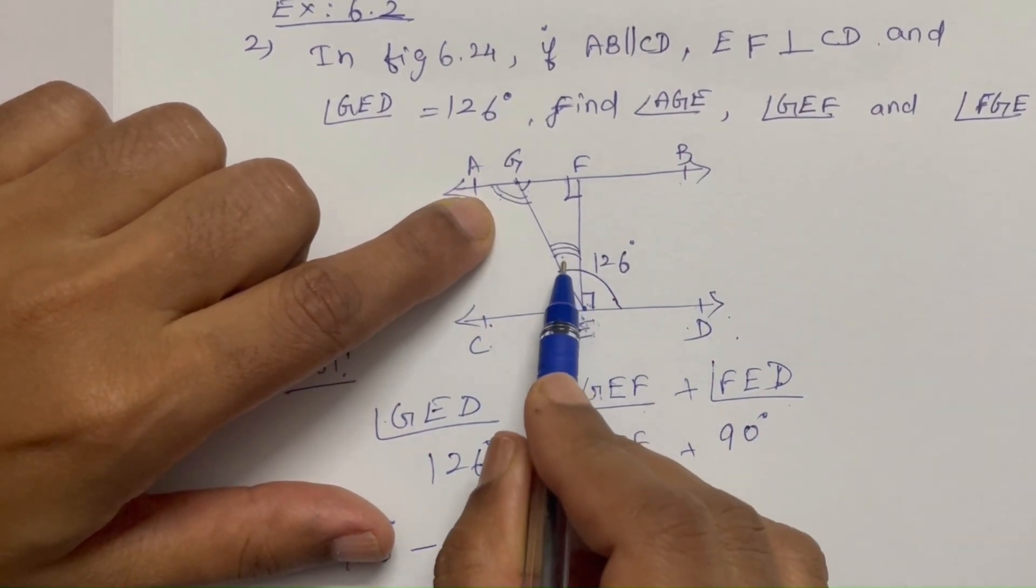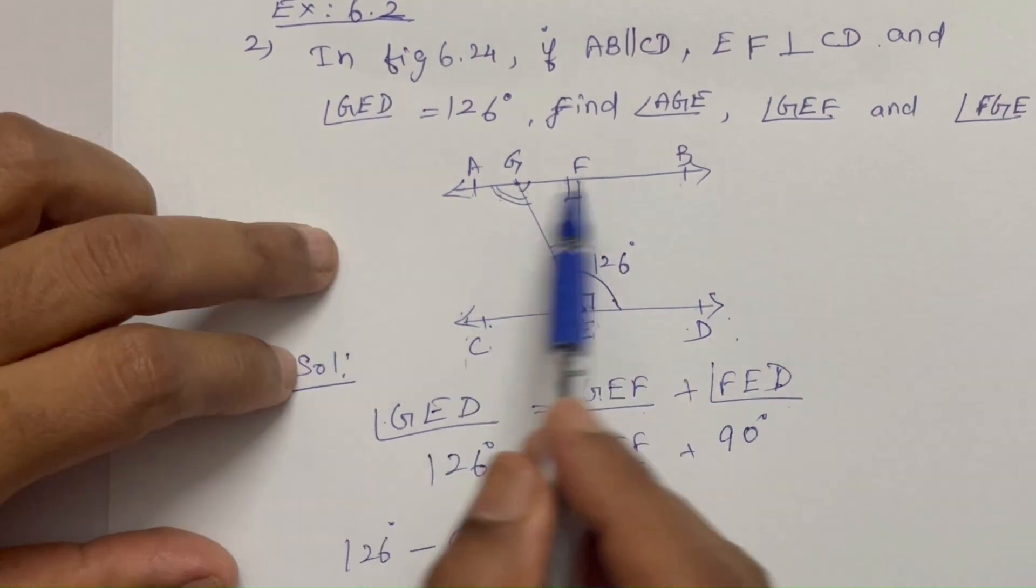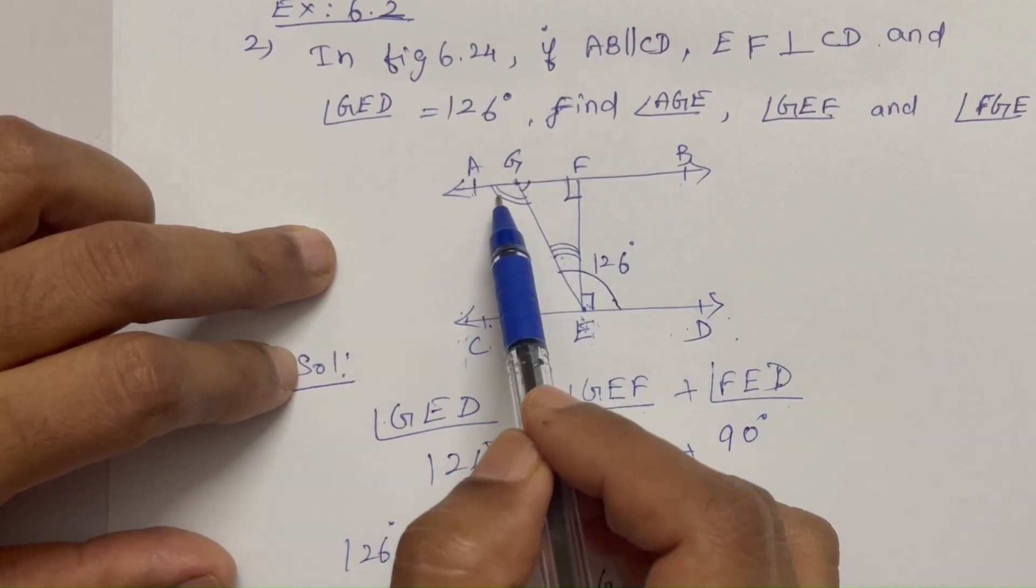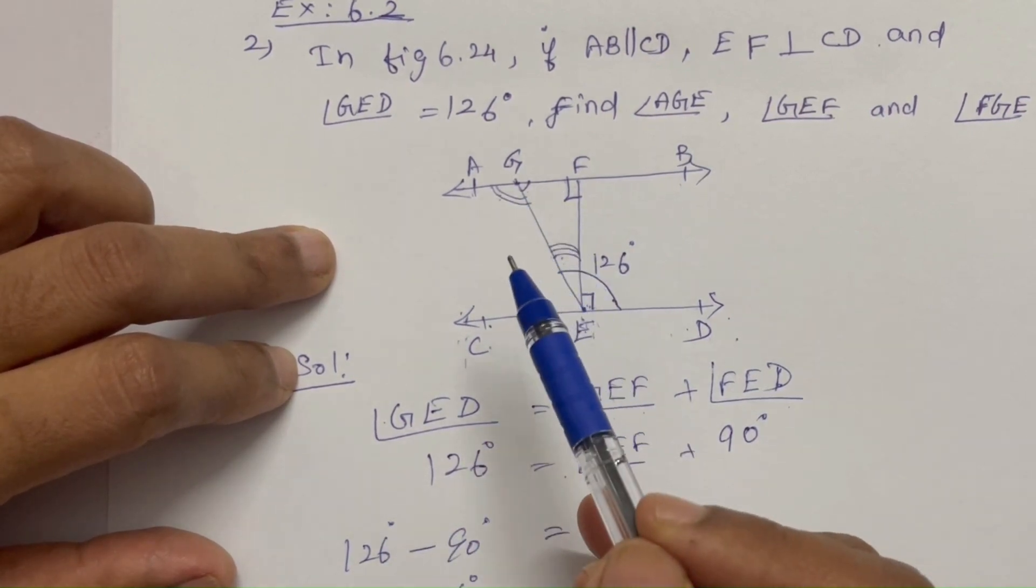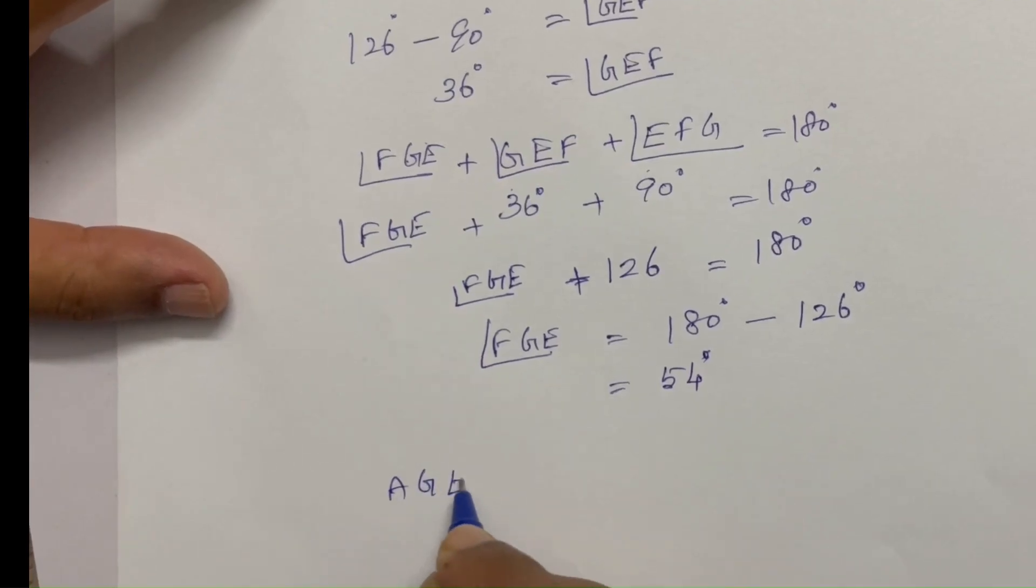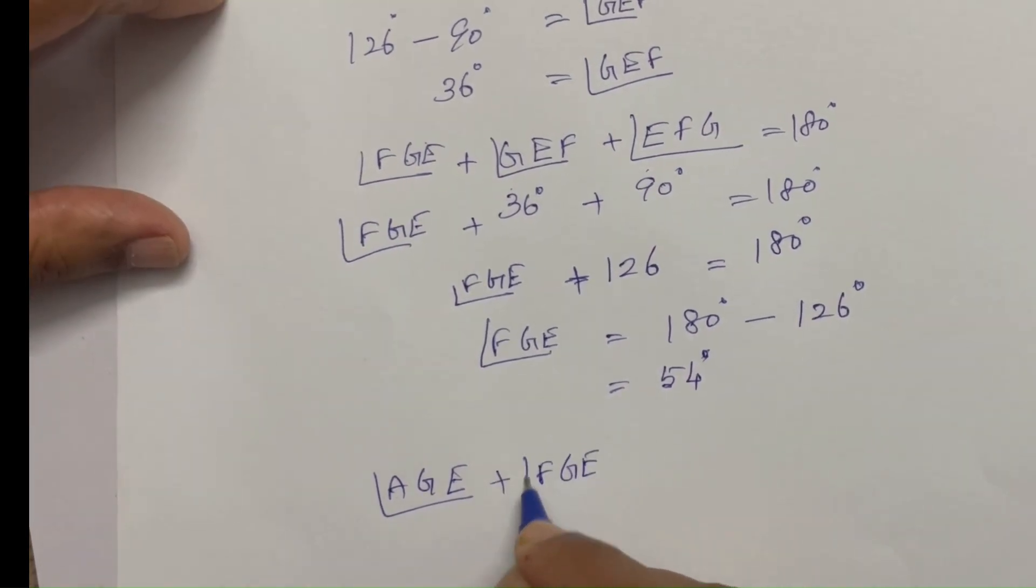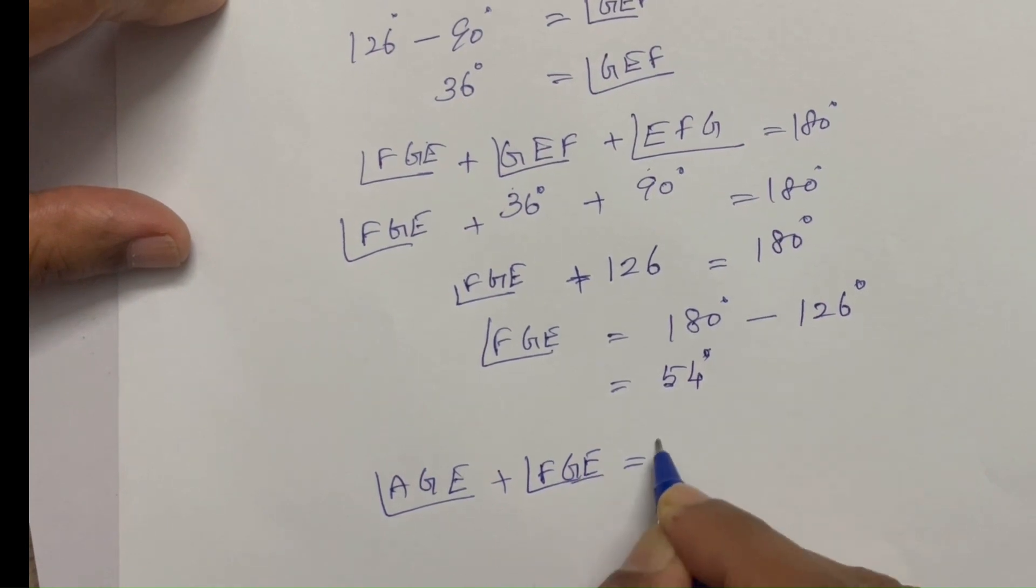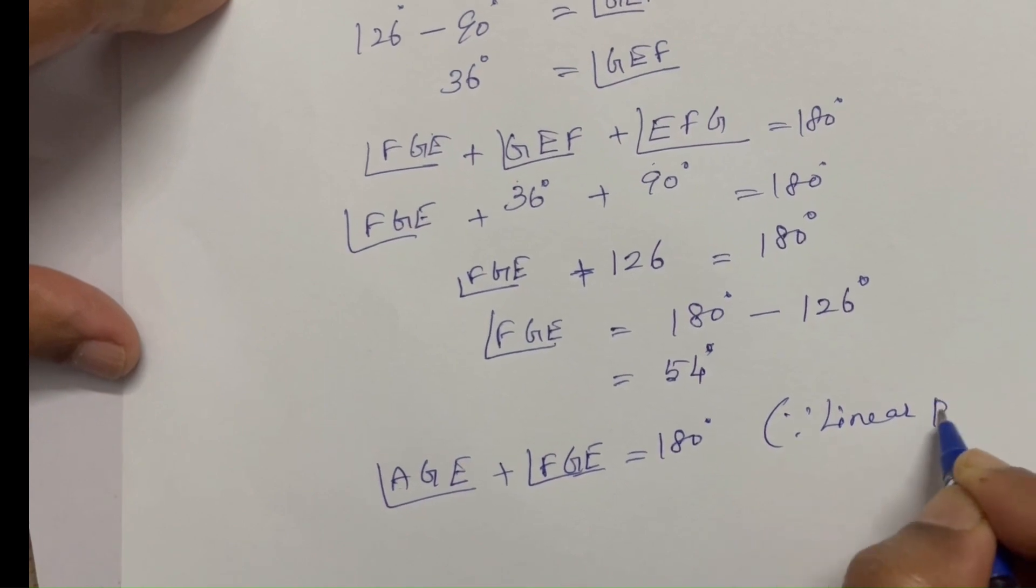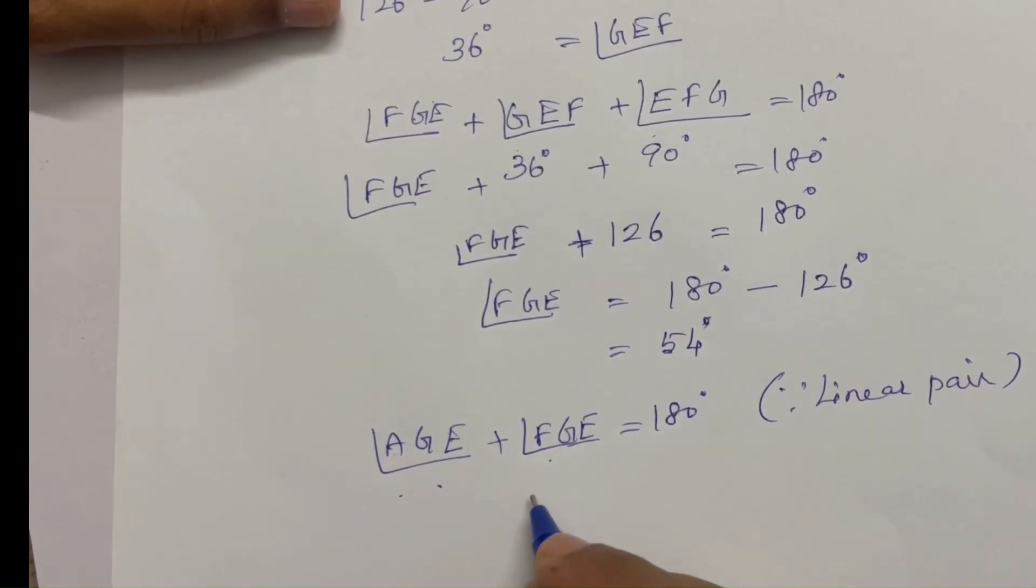AB and CD are parallel lines. Now GE is a transversal. These two angles make 180 degrees because it is a linear pair. Angle AEG plus angle FGE equal to 180 degrees. FGE is calculated by 54 degrees.